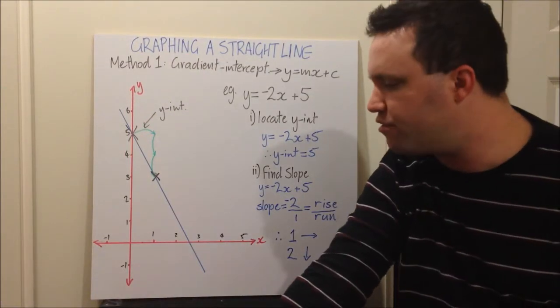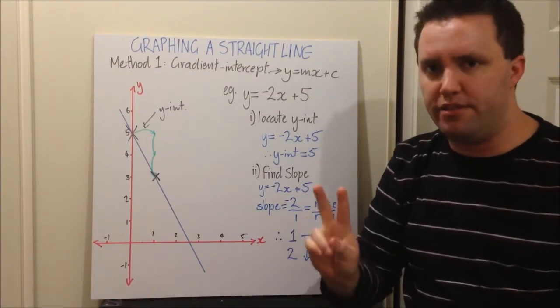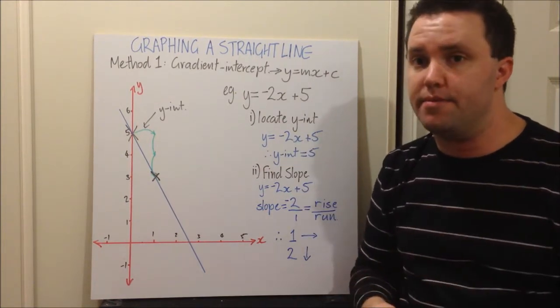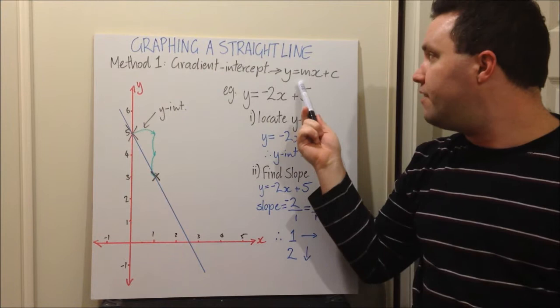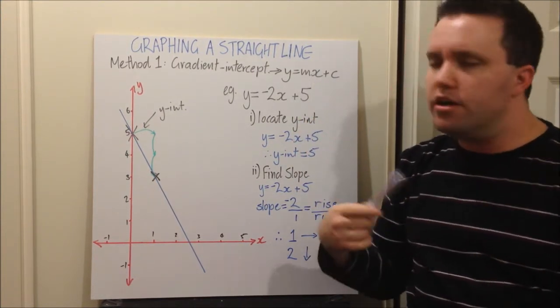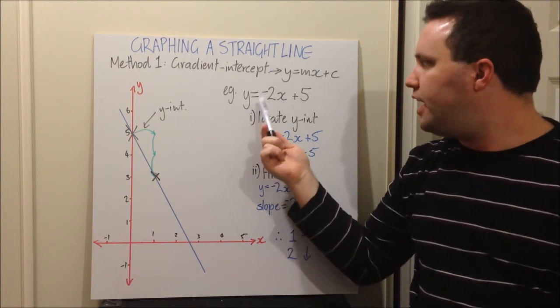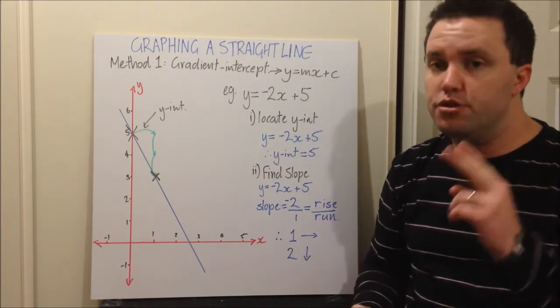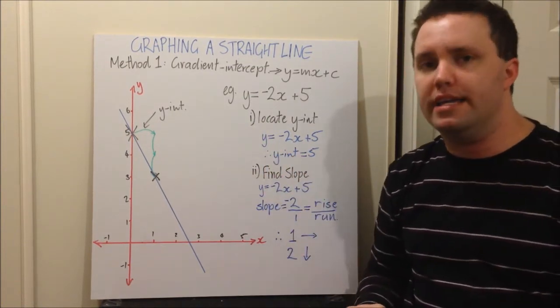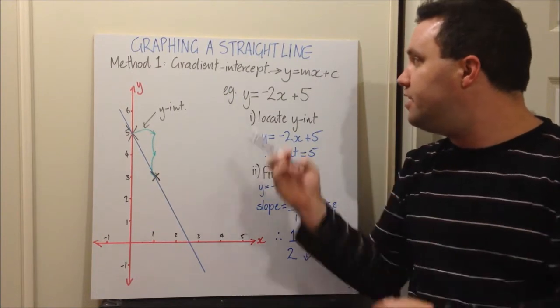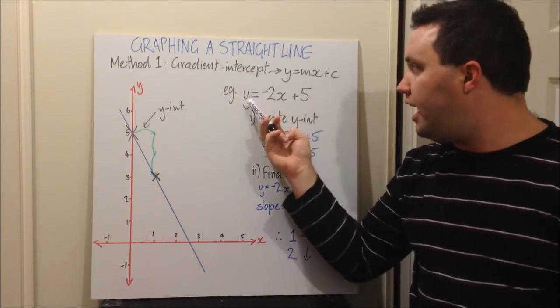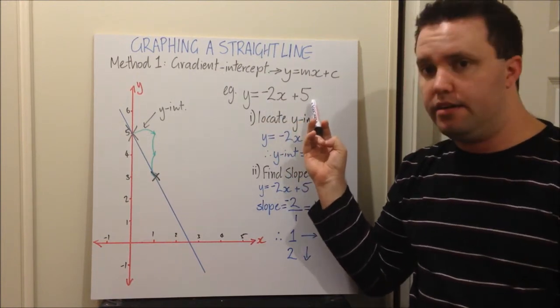Here we have graphing a straight line. There's two methods that we're going to look at in this video. First is this one here, using the gradient intercept method, which is when we have a line in the form y equals mx plus c. I'm going to use as an example y equals negative 2x plus 5. Two-step process to this one. First, locate your y intercept.